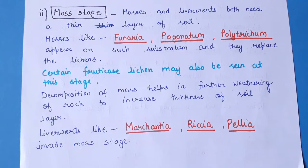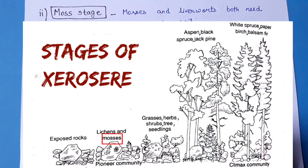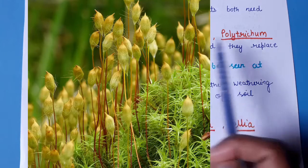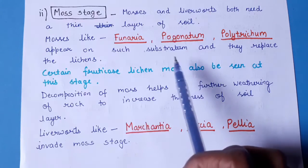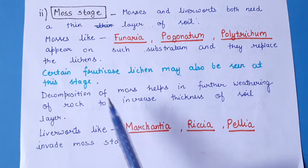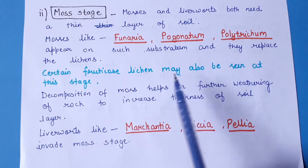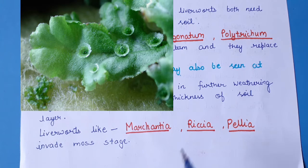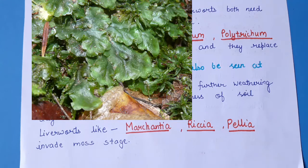The second stage is the moss stage. After the foliose lichens, mosses and liverworts appear, as a thin layer of soil is now available on the rock surface. Mosses like Funaria, Pogonatum, and Polytrichum appear and replace the lichens. Decomposition of moss further helps in weathering of the rocks, increasing soil thickness. Liverworts like Marchantia, Riccia, and Pallavicinia are also present at this stage.